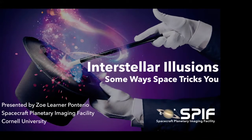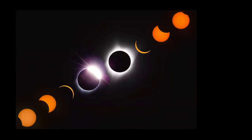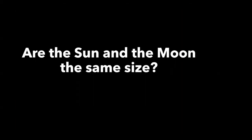Here is your first question — you're just going to need your hands. When we look up into the sky at night we see the moon, and in the daytime we have the sun. If you've ever seen an eclipse, we see that the moon passes right in front of the sun and blocks it, and it appears to just fit and cover the sun. So my question is: are the sun and the moon the same size? Give me a thumbs up if you think they're the same size, thumbs down if you think they're different, or thumb in the middle if you're not sure.